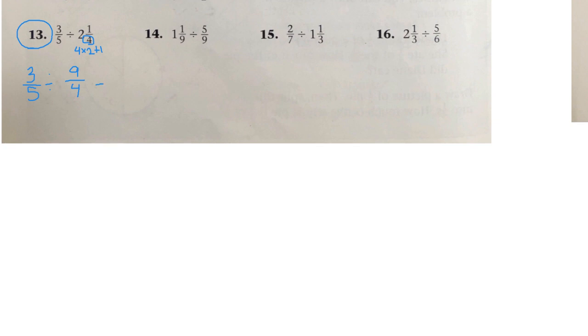Then the next step is to write 3/5 times 4/9. So we take the second fraction and invert it. We can cross cancel. 3 and 9 have a common factor of 3. 3 divided by 3 is 1, 9 divided by 3 is 3. 4 and 5 can't change, no common factor. 4 times 1 is 4, and 5 times 3 is 15. So number 13's answer is 4 over 15.